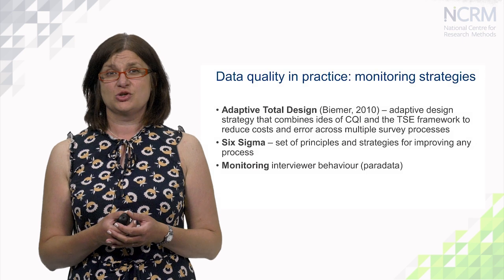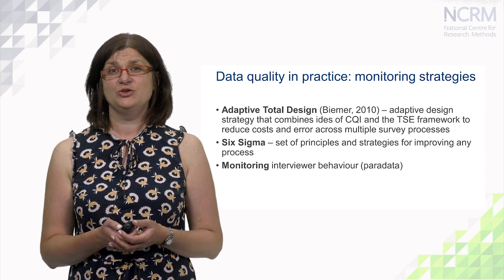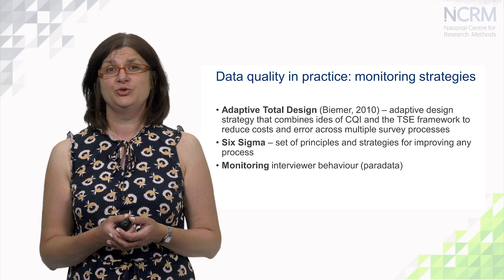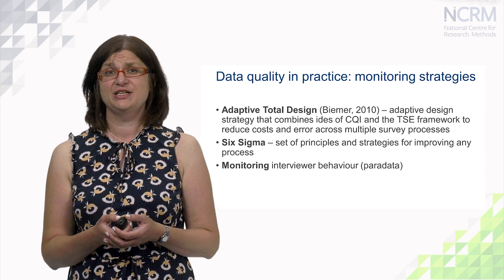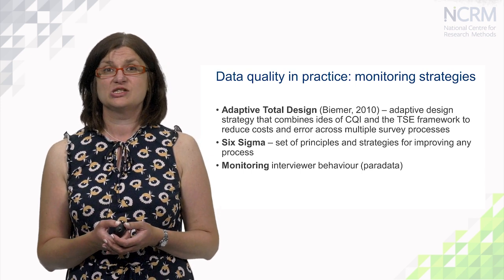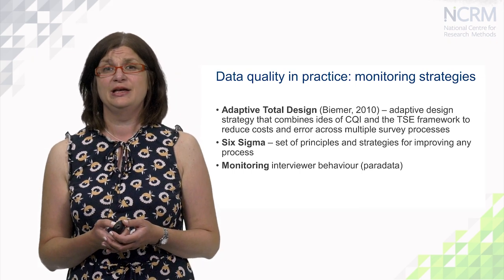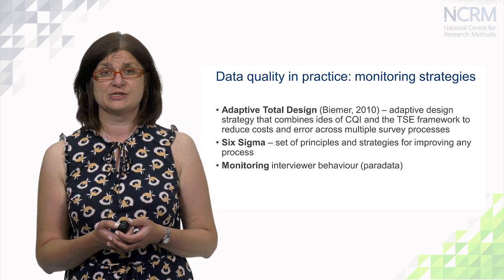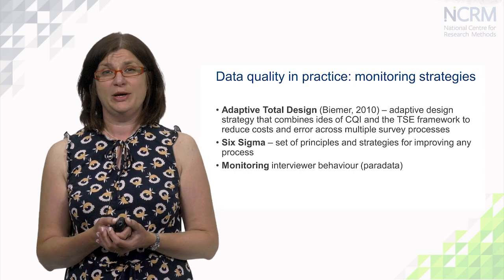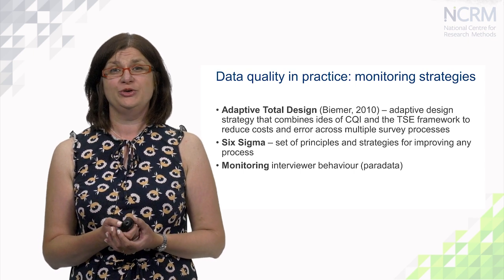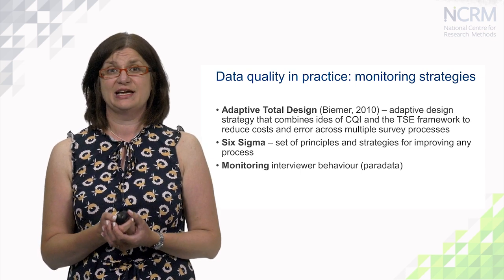Another strategy is called adaptive total design, which combines ideas of continuous quality improvement and the total survey error framework to reduce costs and errors across multiple survey processes. There is also six sigma — a set of principles and strategies for improving any process, used widely in engineering as well. Paradata is now used quite often, for example, for monitoring interviewer behavior and for improving data quality during the fieldwork or data collection stage.